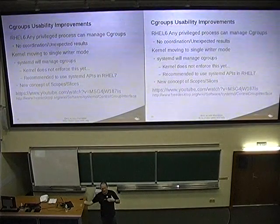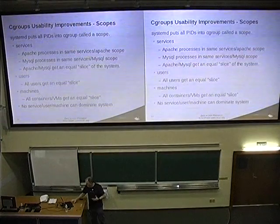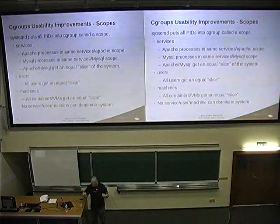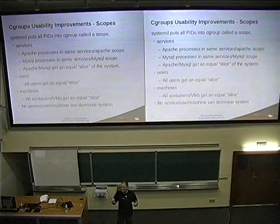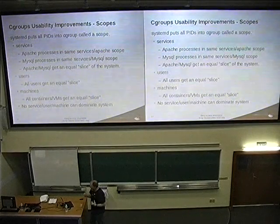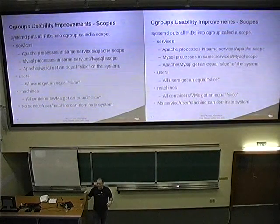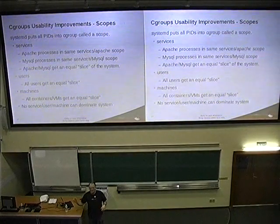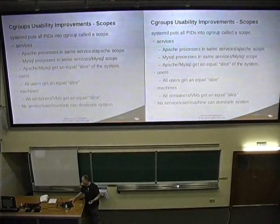You can configure resource constraints on any one of those CGroups — for example, Dan Walsh gets only 20% of the CPU. You can go into unit files and configure them with CGroup constraints instantaneously. I can go into my MariaDB unit file and with one simple line say MariaDB only gets two gigabytes of memory. That's it — it's contained. It's a nice simple way of handling the system.